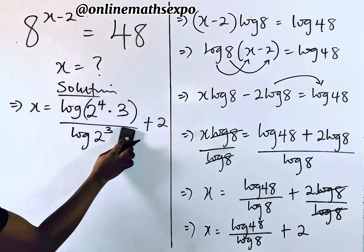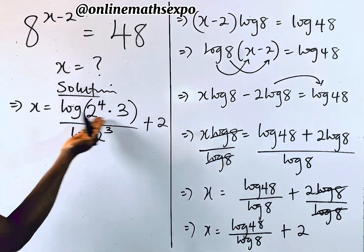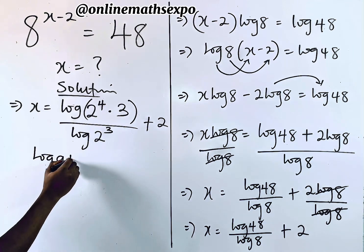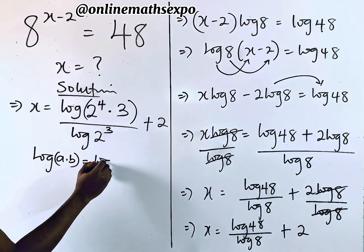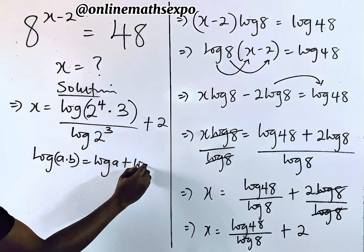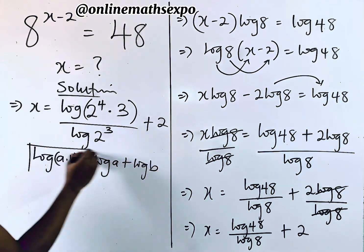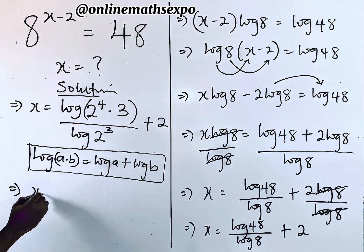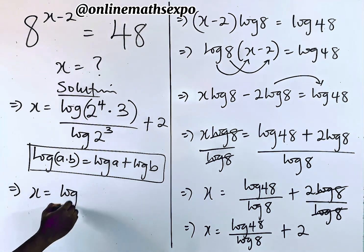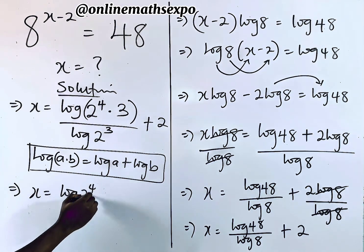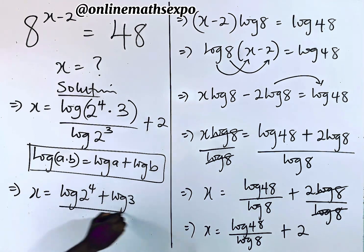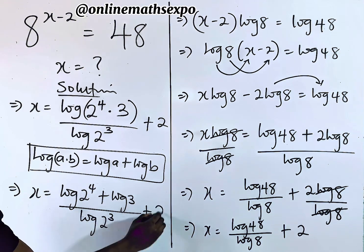Remember, for every log(A × B), it equals log(A) plus log(B). Applying this rule, x equals log(2^4) plus log(3), all divided by log(2^3), plus 2.